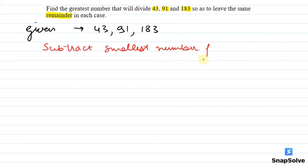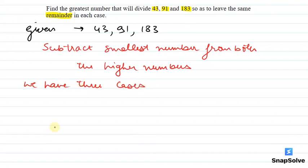Subtract the smallest number from both the higher numbers. So we have three cases: 183 is greater than 43, 183 is also greater than 91, and 91 is greater than 43.